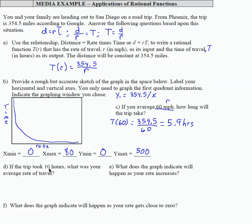If the trip took 10 hours, what was your average rate of travel? So it's going to be less than 60, right? Because at 60 miles an hour, it was about 6 hours. So if the trip took 10 hours, that's an output value. So that 10 is a t value.